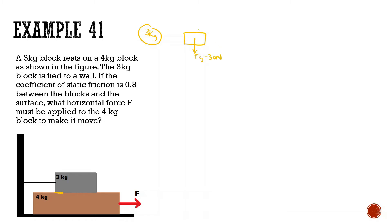For the three kilogram block: force of gravity is 30 newtons, force normal is 30 newtons upward from the bottom block. There's going to be a force of friction — as it's getting pulled to the right, friction wants to make it move to the right — however, the tension force is going to pull the other way, preventing it from moving.